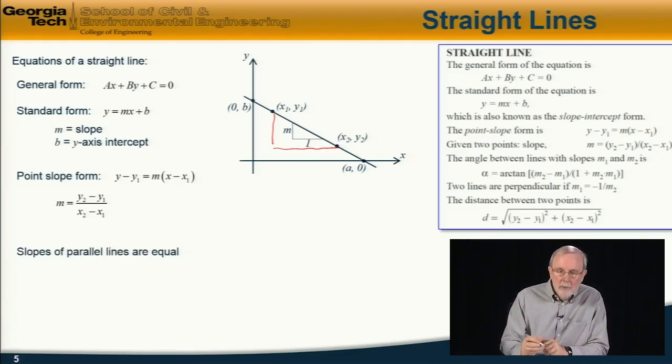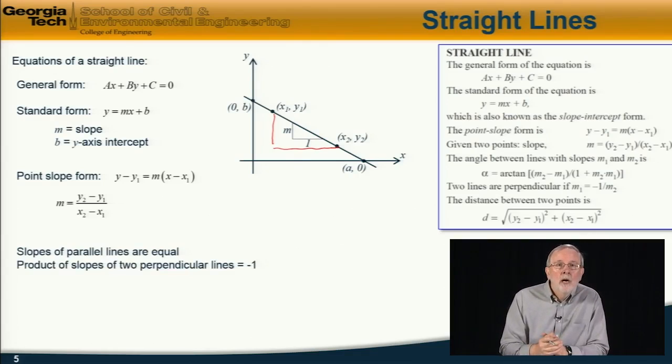And some other important points to remember are that the slopes of parallel lines are equal, and the product of the slopes of two perpendicular lines, in other words which are at right angles to each other, is equal to minus 1.